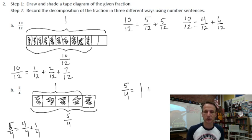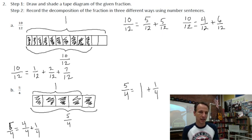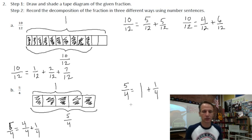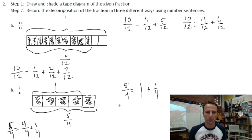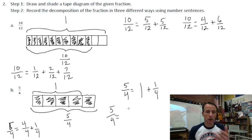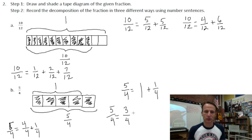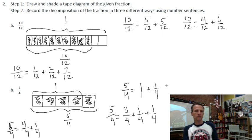Five fourths also equals one whole and one fourth — notice the whole number one should be as tall as the fractions. For a third way with three add-ins: three fourths plus one fourth plus one fourth is five fourths.